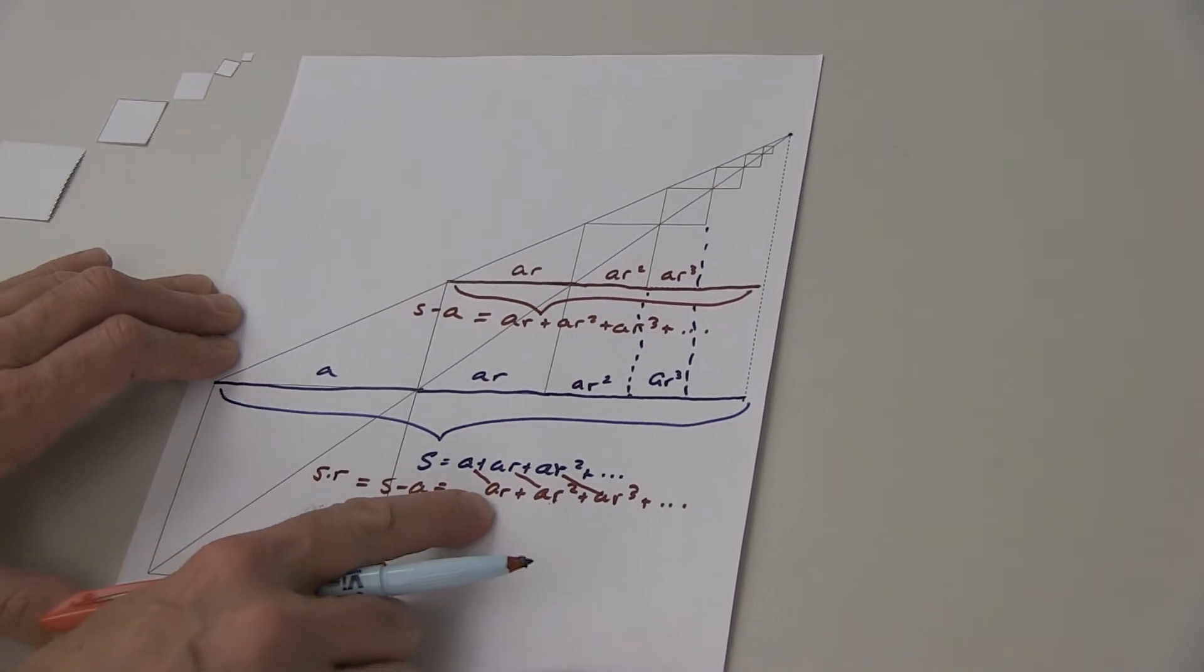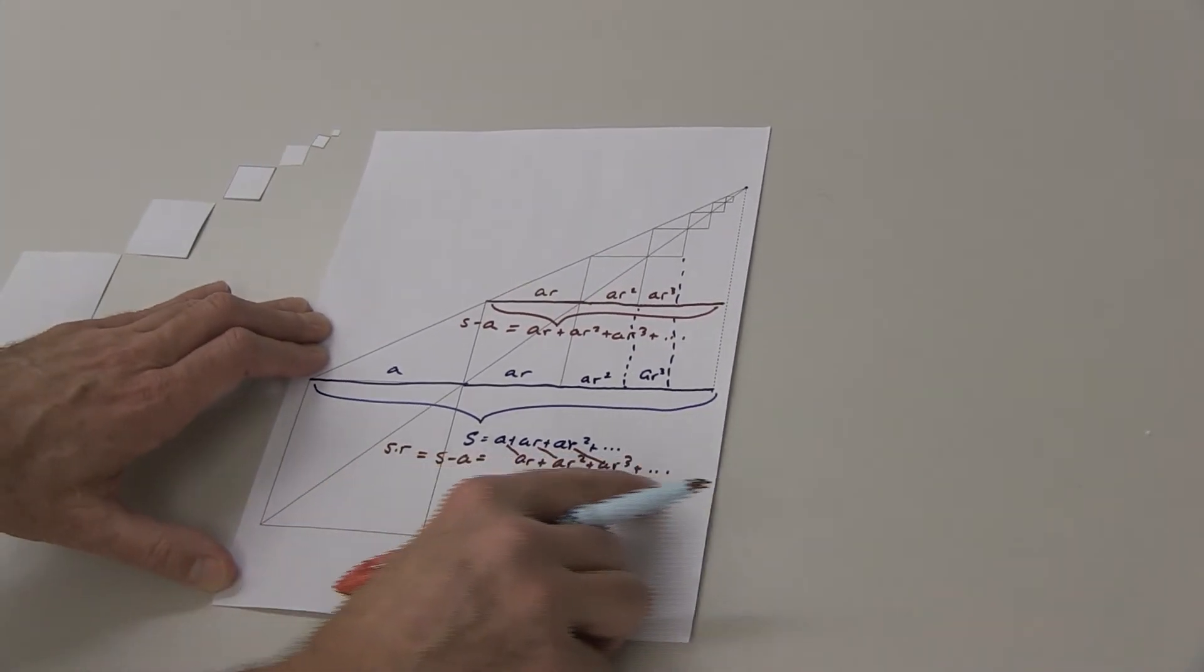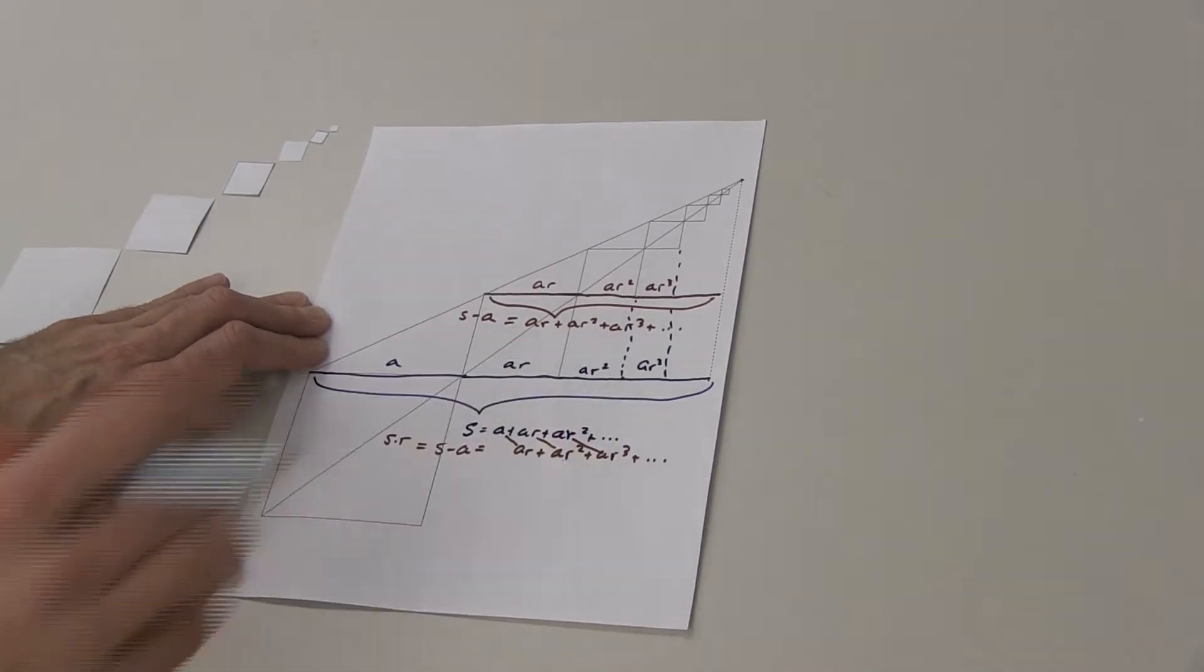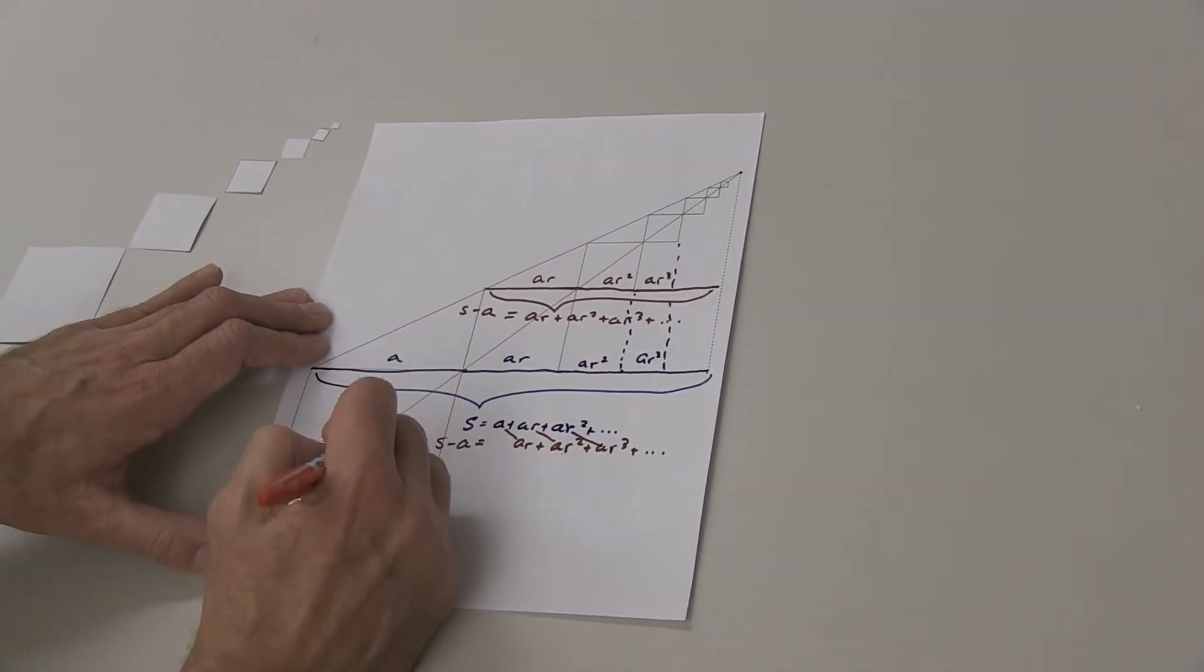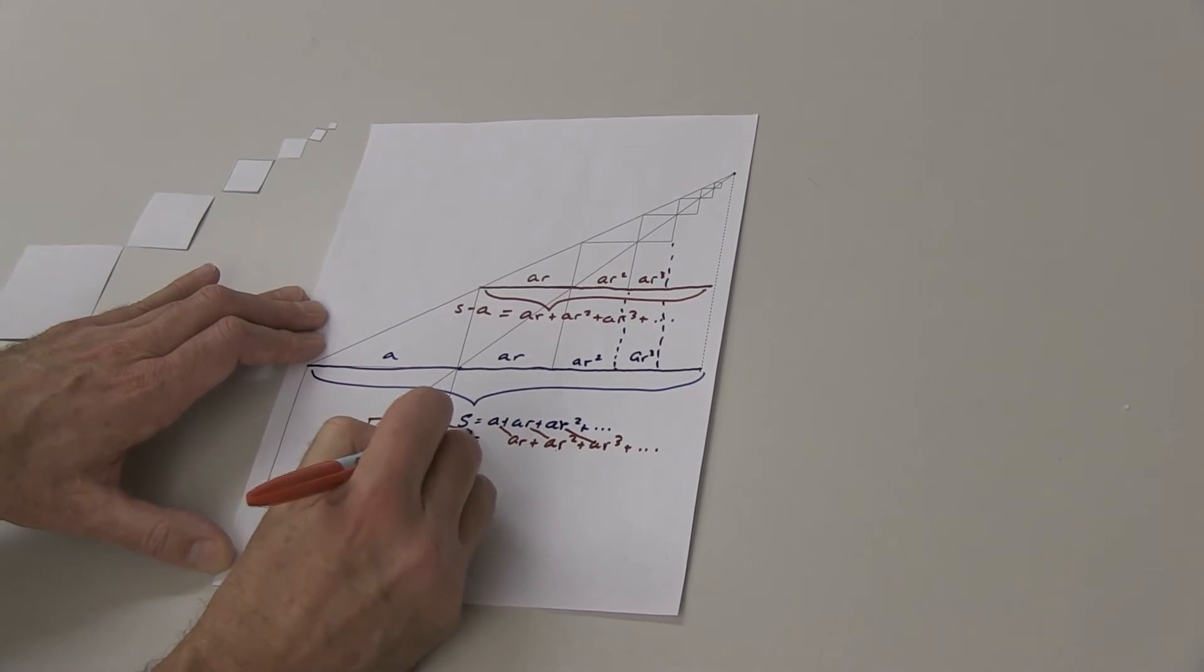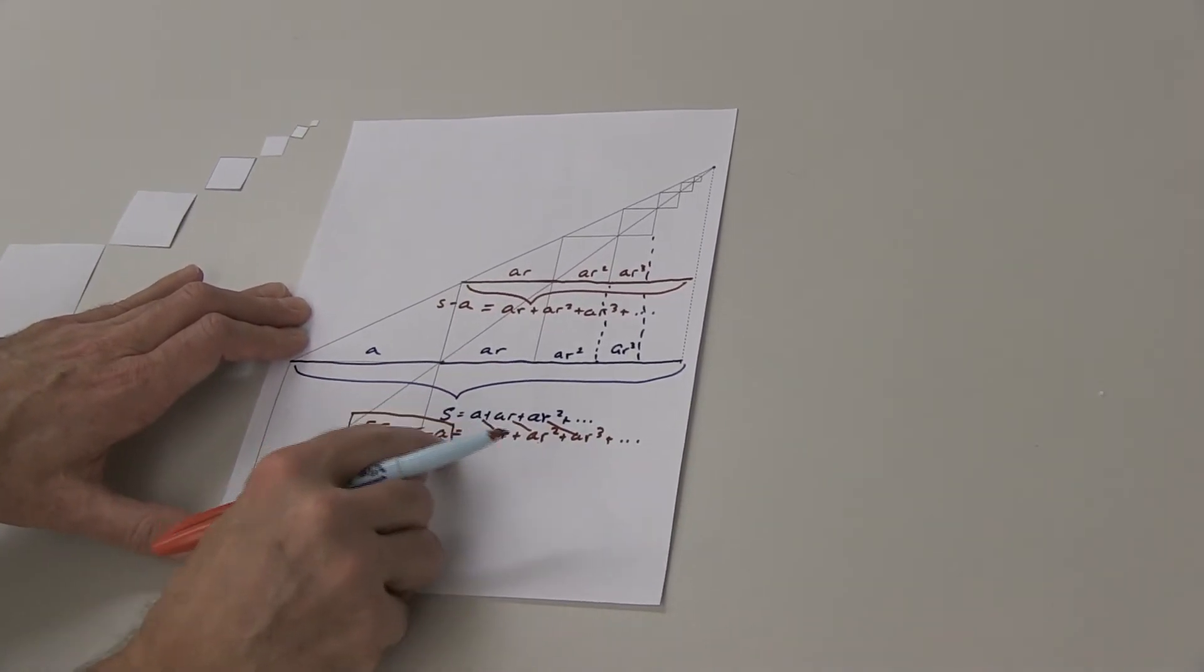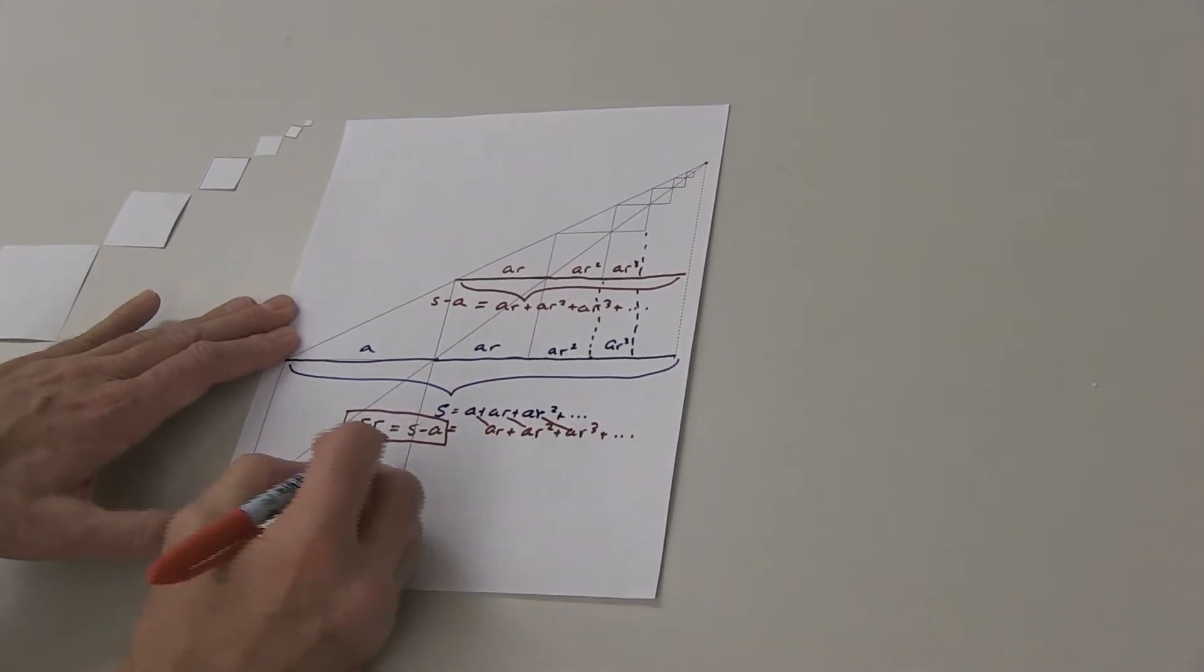You have to think about that for a moment. S minus A is this list. But it's the same as this list, everything times R. So there's an equation. S times R, that list times R, is the same as that list minus A. That can be solved.